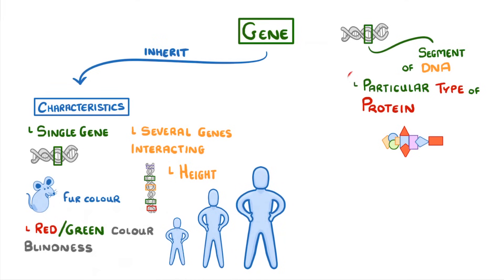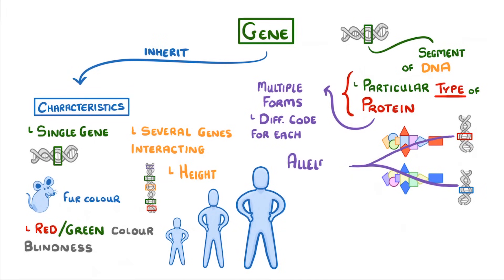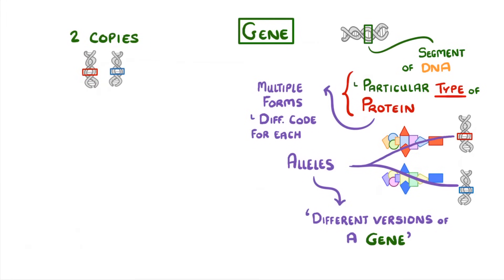If we look back at the definition of a gene, you'll notice that it codes for a particular type of protein. The reason I say type of protein is that there are often multiple forms of the same protein, and so there'll be a different genetic code for each of those forms. We call these different codes alleles, so you can think of alleles as different versions of the same gene. Because we have two copies of every gene, one from each of our parents, it means that we'll have two alleles of each gene.